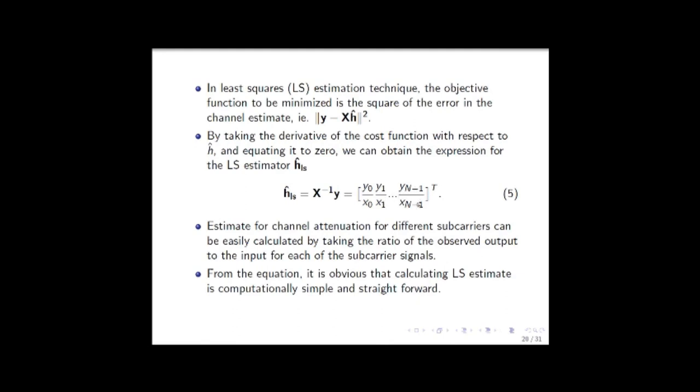As we can see, it is quite straightforward to find the channel attenuation vector because you just need to take the ratios of the gains for each of the subcarriers. So it is computationally very simple.